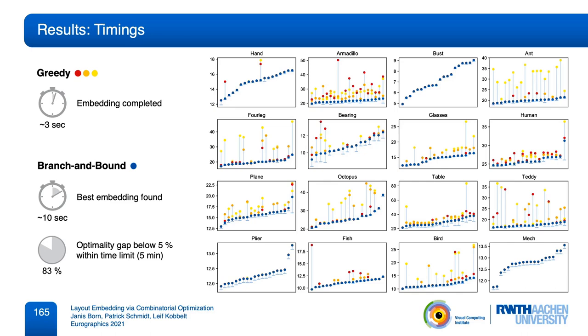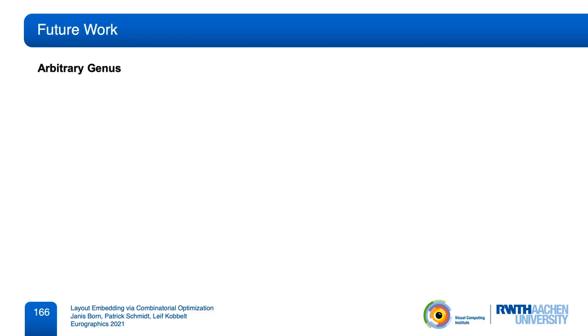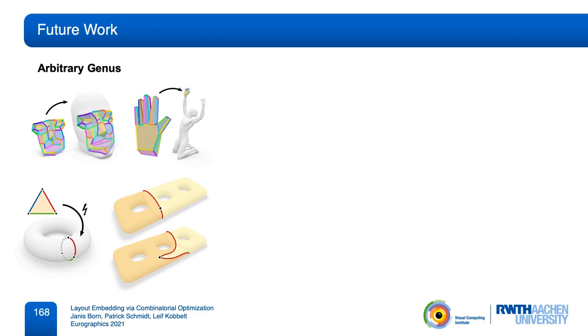And there are other interesting research directions. One is extending this technique to objects of arbitrary genus. Currently, our method is only guaranteed to produce valid results for genus 0 and disk topology surfaces. On other domains, handles introduce additional topological degrees of freedom, which need to be searched explicitly if we want to reliably find a solution.